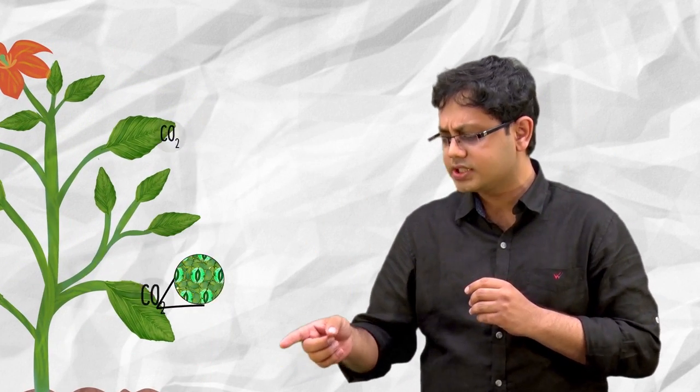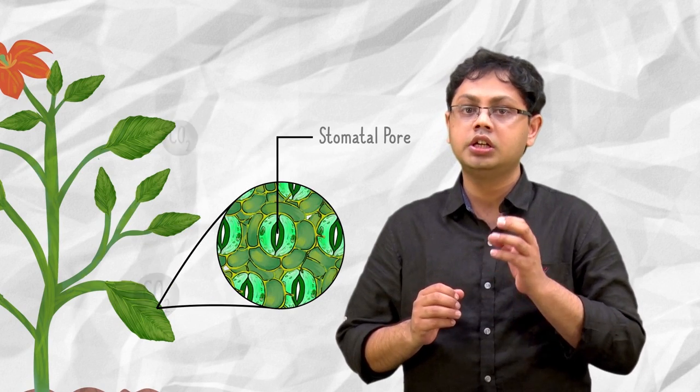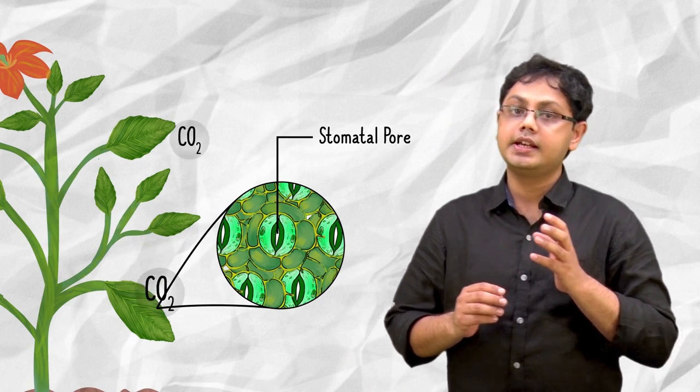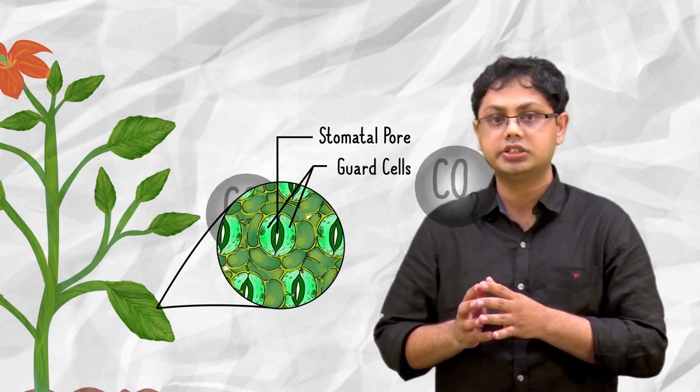The plant absorbs carbon dioxide from the air through its leaves through these tiny little pores called stomata. Stomata is surrounded, as you can see, by guard cells.